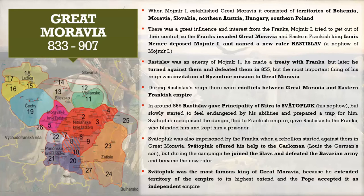When Mojmír the First established Great Moravia, it consisted of territories of Bohemia, Moravia, Slovakia, northern Austria, Hungary, and southern Poland. You can see it on the map on the left. The Slovak territory is in its center, marked as number two and three.